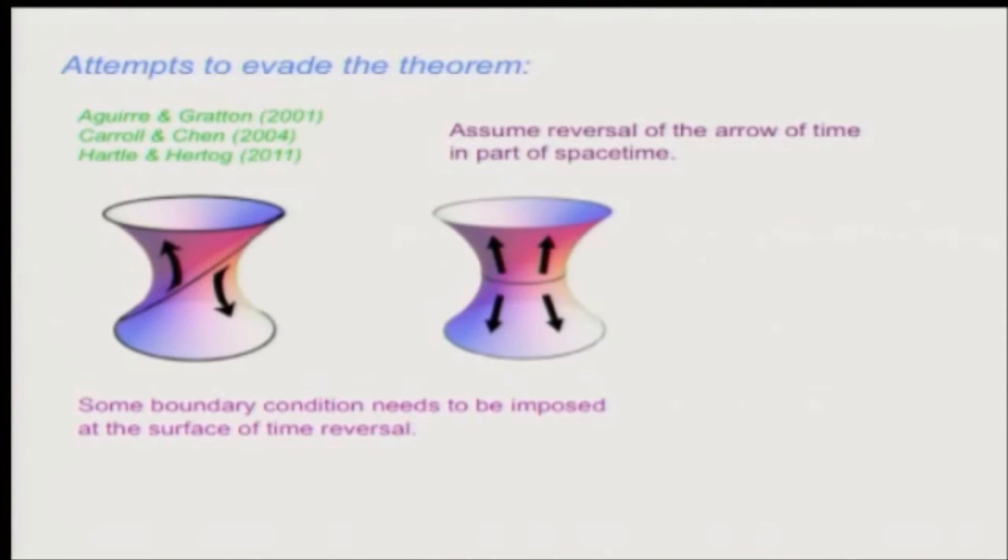Okay, so now an interesting proposal to avoid this conclusion was made by these people, starting with Aguirre and Grattan. What they suggested is that, well, for simplicity, talking about de Sitter space as a prototype of inflation, even though full de Sitter space cannot be filled by expanding congruence of geodesics, it has kind of the contracting and expanding parts, but half of de Sitter space can be. And so what they said, okay, what if the arrow of time is reversed in half of de Sitter space? So you can do it this way with a null boundary between the two parts, or you can do it this way with a spacelike boundary. And then you would have bubbles nucleating, kind of expanding in the upward direction in the upper half and in the lower half. You also can have inflation with bubbles kind of going upside down.